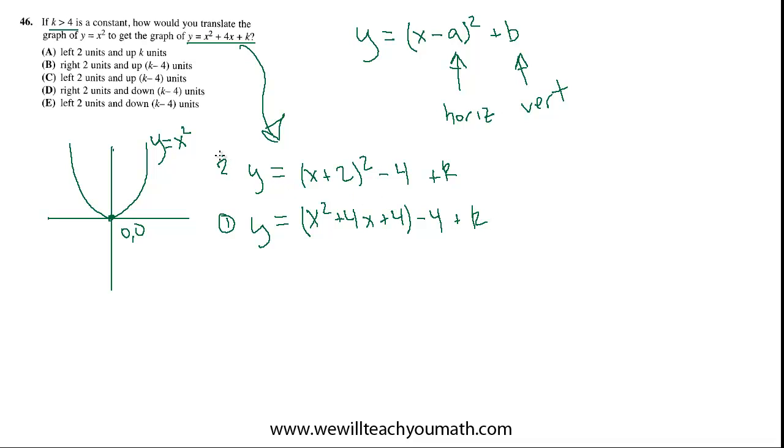So, looking at this second thing, we're actually a lot closer to our desired format. We now have x plus a constant quantity squared minus 4 plus k. So, 4 and k are both constants, so we can clean that up a bit, too. So, let's write one more step. Let's now write this as x plus 2 quantity squared plus k minus 4.